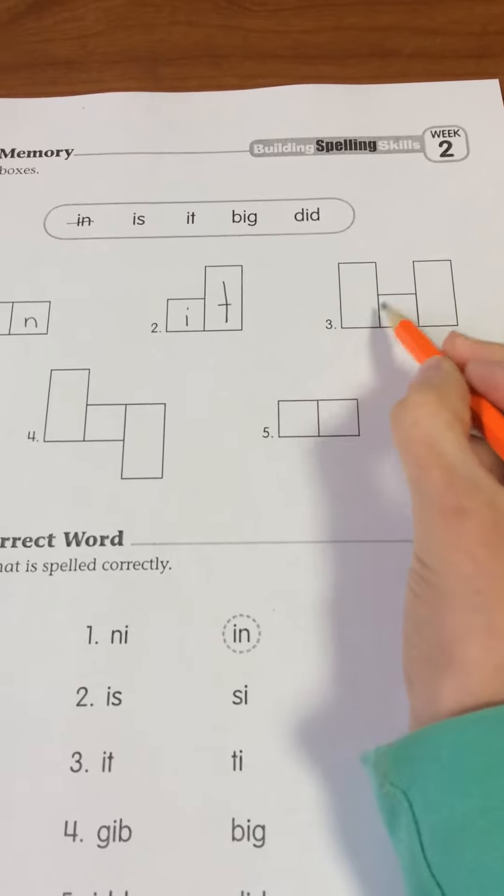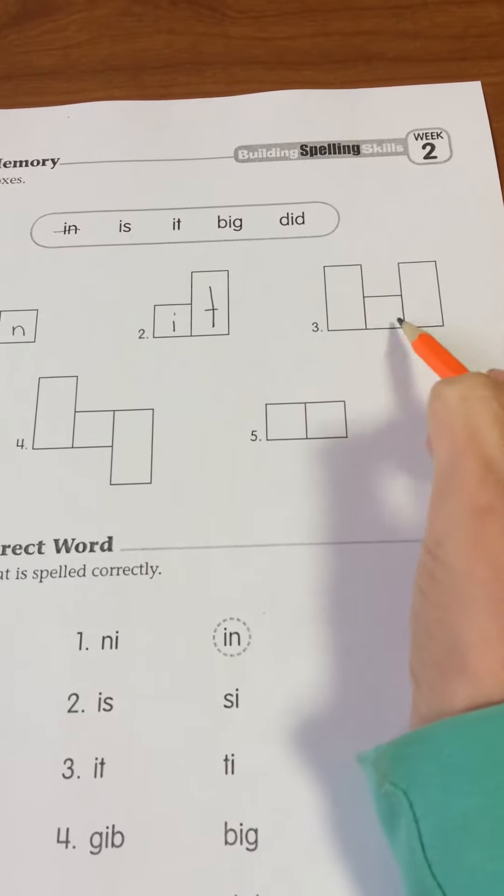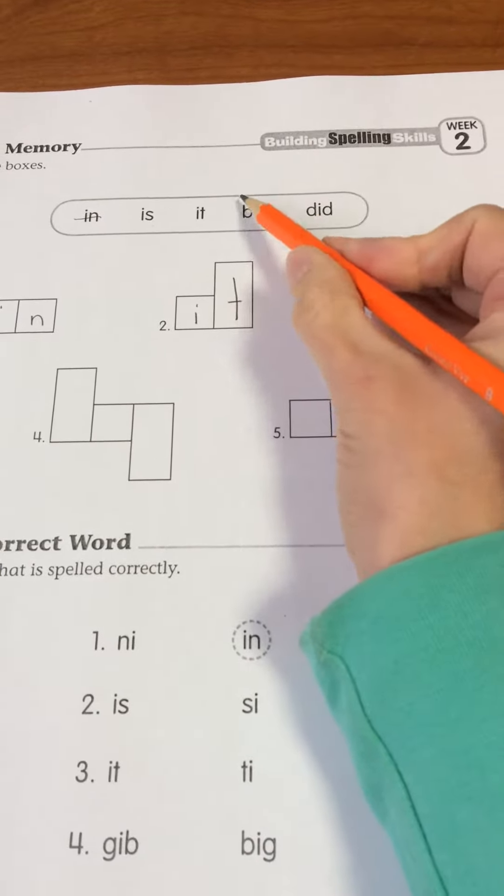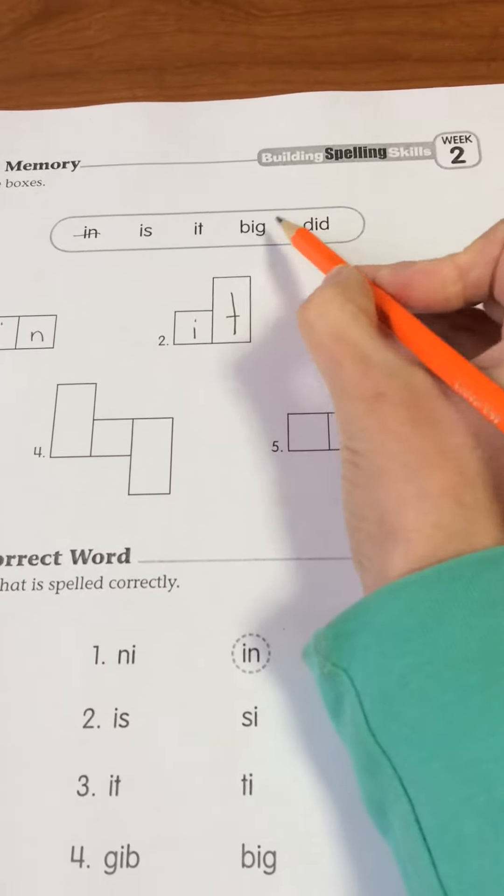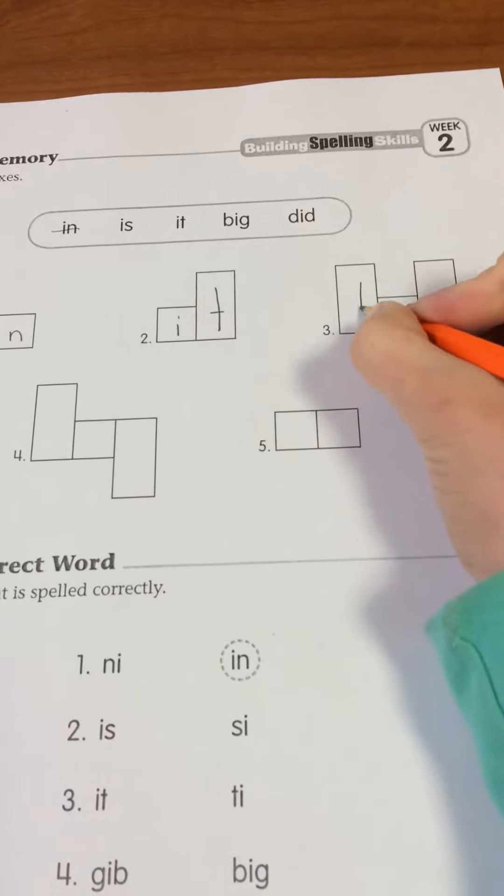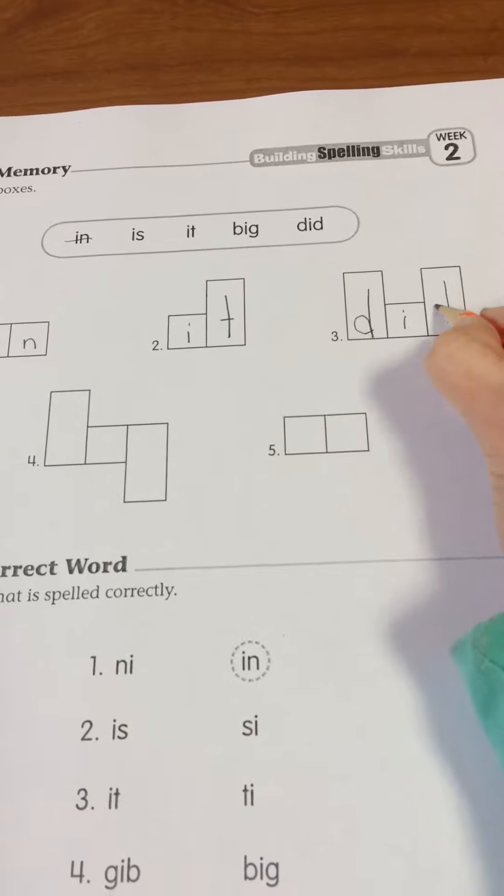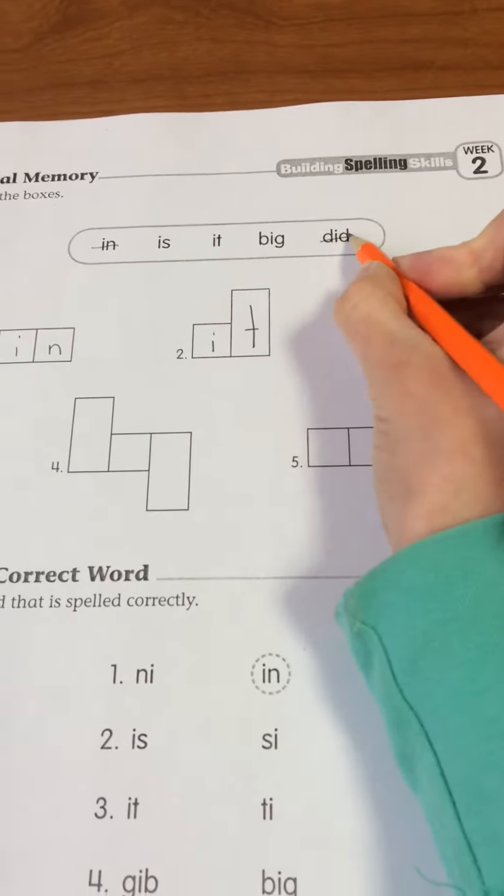Number three has three boxes. Two are tall, one is short. Now, big starts with a tall letter, but it doesn't end with a tall letter. So we want did: D, I, D. And let's cross it off at the top.